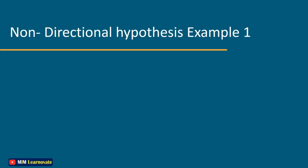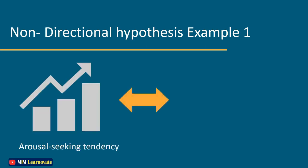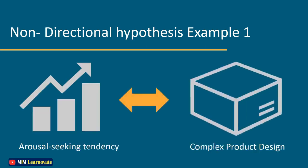Non-directional hypothesis example 1: There is a relation between arousal seeking tendency and consumer preferences for complex product designs. In this example, you can see that there is no clue as to whether arousal seeking tendencies and preferences for complex product designs are positively or negatively correlated. The direction of the relationship is not known, so we will use a non-directional hypothesis.